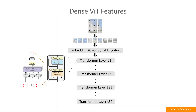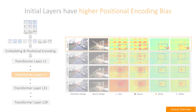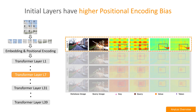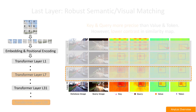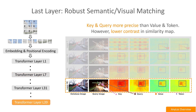We use the DINOv2 Vision Transformer and extract per-pixel features across layers and facets, exploring their various properties. The shallower ViT layers display a strong position encoding bias and capture local structure. On the flip side, features from the final layer capture global structure and semantics, but lack the precision needed for VPR aggregation.